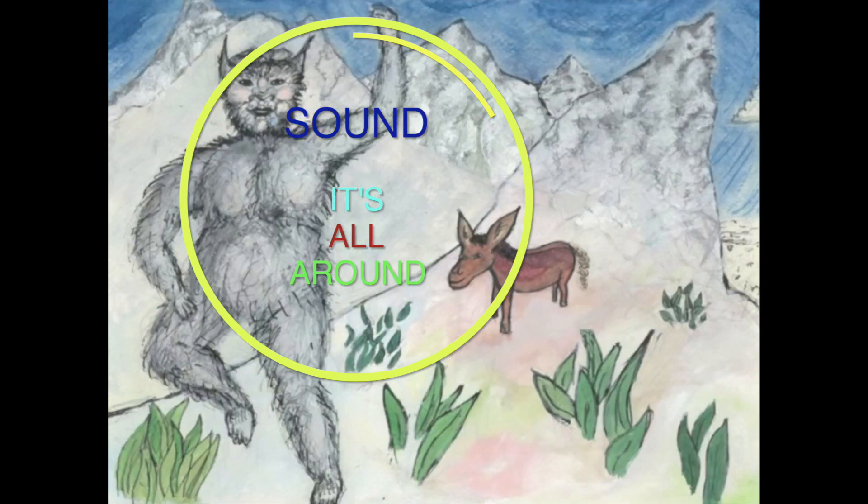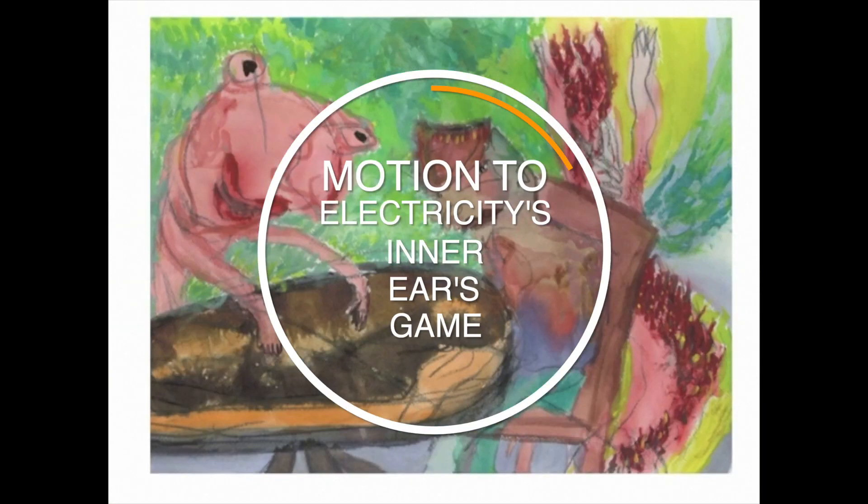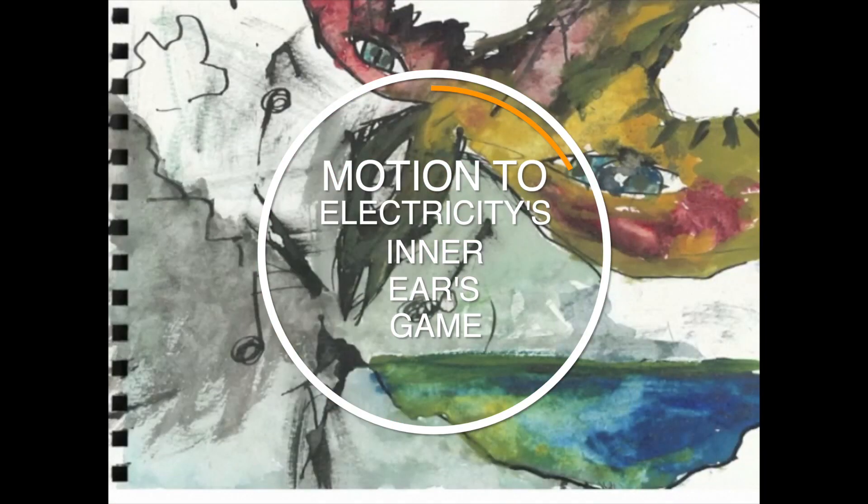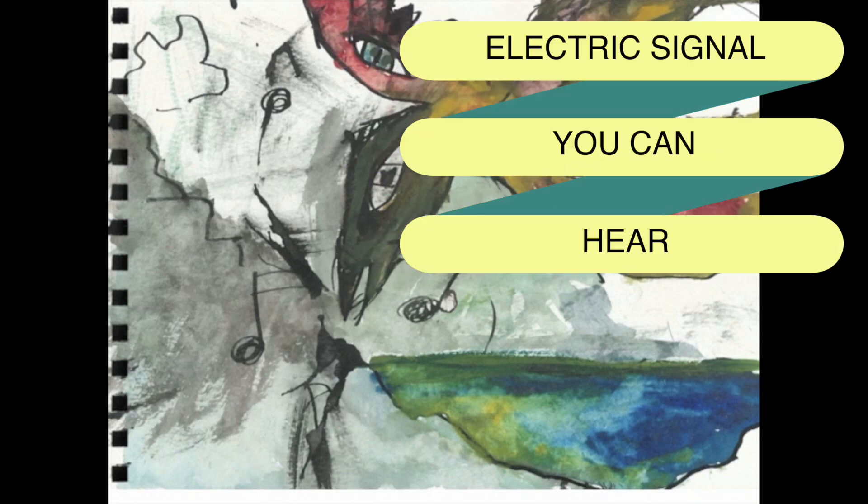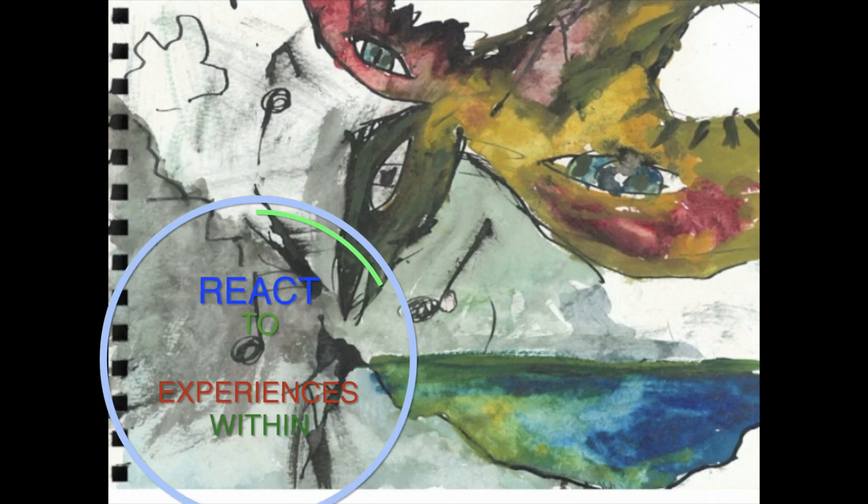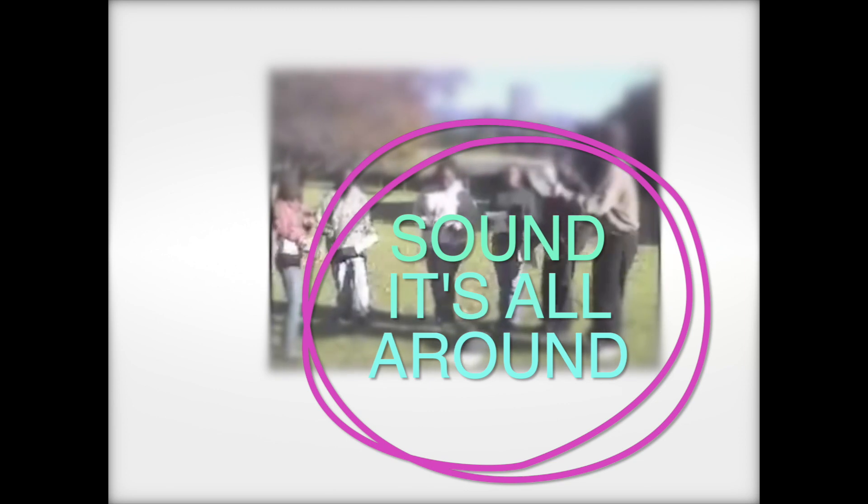Vibrating scene, signal to brain. Motion to electricity's ears gain. Ear changes sound and air, electric signal you can hear. Trigger frame, mix frame, reacts to experience within. Vibrating source spreads to air, changes in ear to electric signal you can hear.